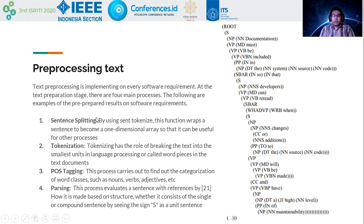Sentence splitting uses the sentence tokenizer function, which writes a sentence into a one-dimensional array so that it can be useful for subsequent processes. Tokenization has the role of breaking text into its smallest units in language processing, also called word pieces in the text document.